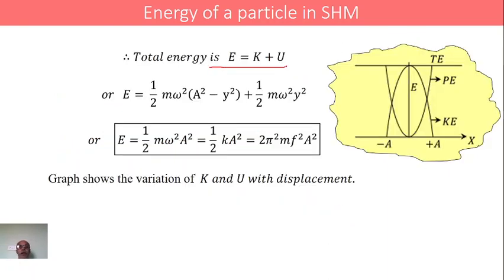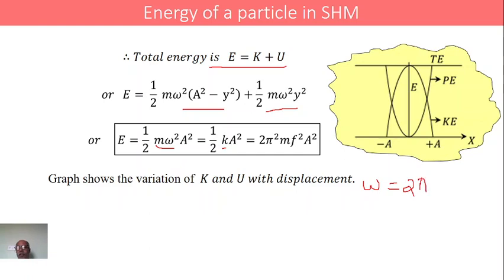The total energy is the sum of kinetic and potential energy: E equals half m omega squared times (a squared minus y squared) plus half m omega squared y squared. Simplifying, E equals half m omega squared a squared. Since m omega squared equals k, this is also equal to half k a squared. Rewriting omega as 2 pi f, we get E equals 2 pi squared m f squared a squared, where f is the oscillation frequency and a is the amplitude.